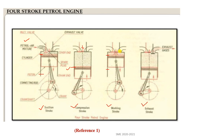The working stroke is so named because work output is obtained from the engine during this stroke. Both the inlet and exhaust valves remain closed during this stroke. In the exhaust stroke, the piston moves from BDC to TDC, the exhaust valve opens, and the combustion gases leave the cylinder to the atmosphere. This process then repeats.